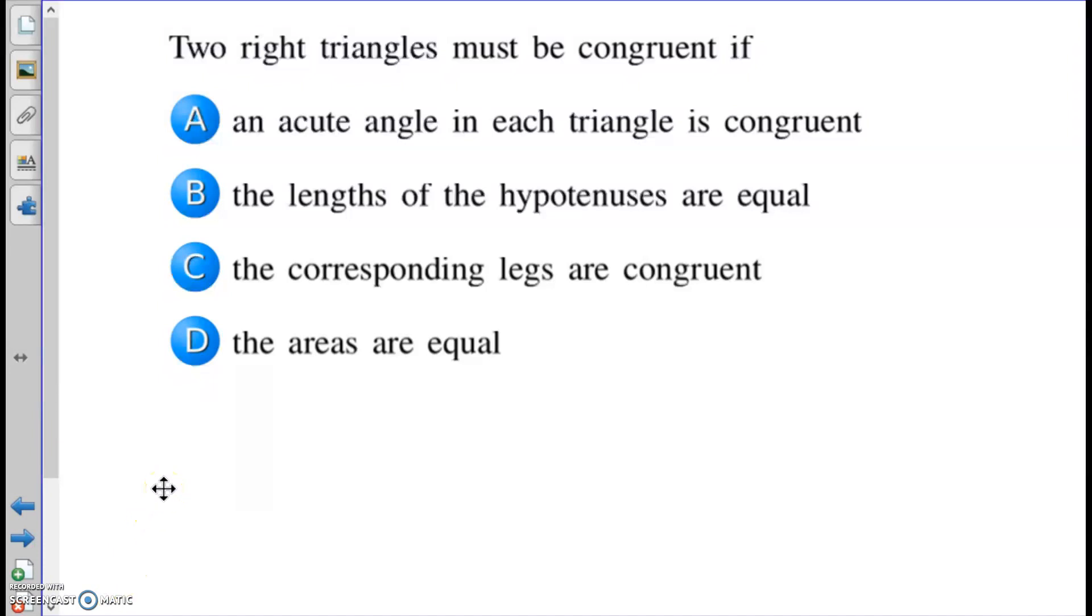Number 7, and maybe I'll make this the last one of this first video. Two right triangles must be congruent if what? An acute angle in each triangle is congruent. Well, think about it. We have right triangles. If they're right triangles, all we know is that we have an angle congruence because they both have a 90 degree angle. If I get one more acute angle, that's angle angle. I'm looking for congruency, which again, that's not going to be enough. That would prove similarity. So I'm going to say false.